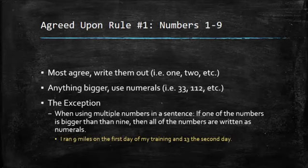There is an exception to the rule. The exception is that if you're using multiple numbers in a sentence, then you can indulge a little bit. So the example here says I ran nine miles on the first day of my training and 13 on the second day. If we just ended this sentence after training, then we would spell nine out. But because we have 13 there, we can write out 13, and then we can also go back and write down nine. So that's the rule on numbers one through nine. If it's anything that's in a single digit, then we don't write them as numerals, we write them out.